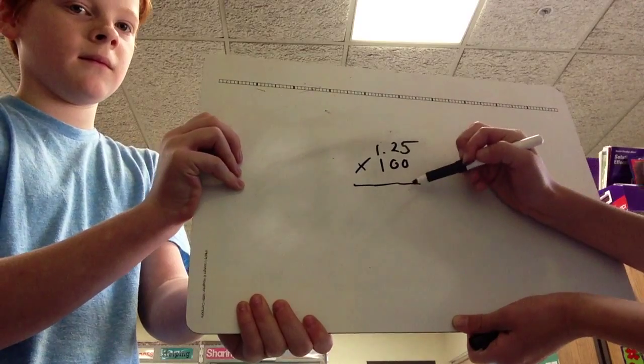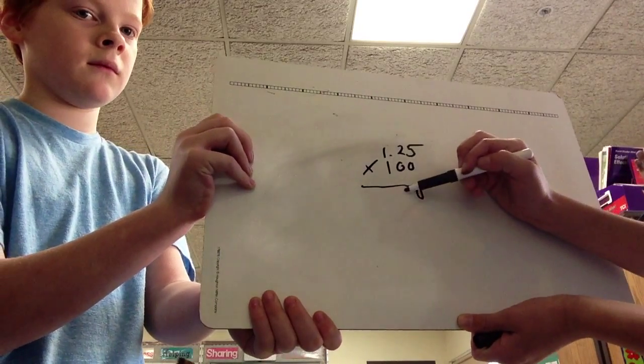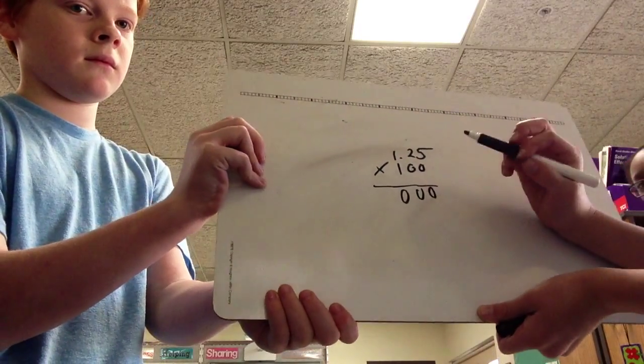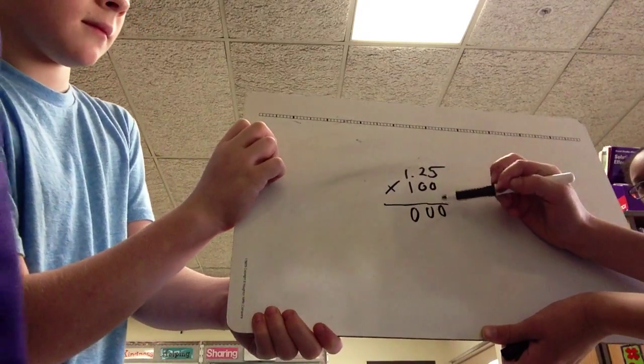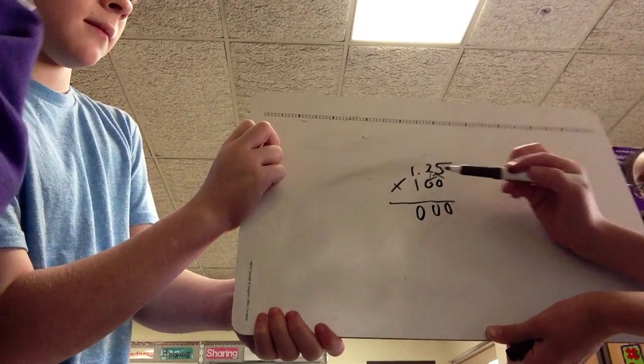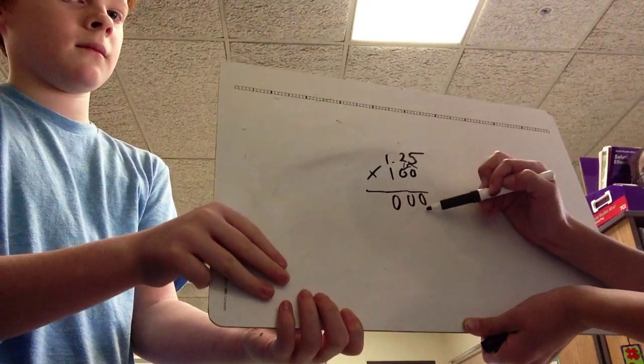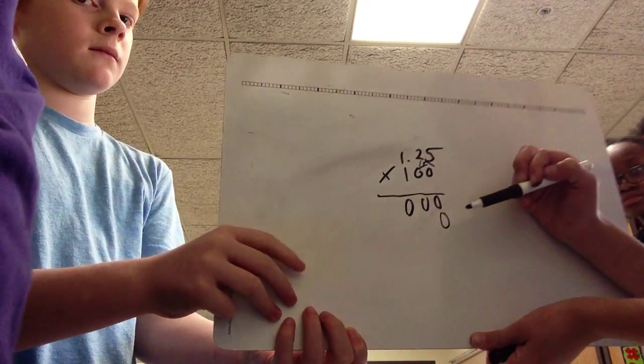0 times 5 is 0, 0 times 2 is 0, 0 times 1 is 0. So that's pretty basic. Since you're moving on to another place value, you're going into the tens place. You have to put a 0 as a placeholder there.